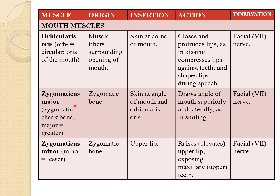The next is the zygomaticus major. 'Zygomatic' refers to the cheekbone, and 'major' means greater. As the name indicates, it originates at the zygomatic bone and inserts at the skin at the angle of the mouth and orbicularis oris. Its action is to draw the angle of the mouth superiorly and laterally, as in smiling. So the muscle aiding in smiling is the zygomaticus major.